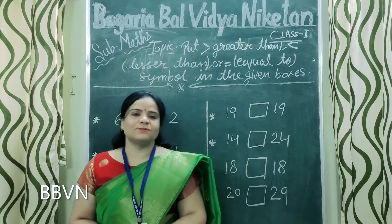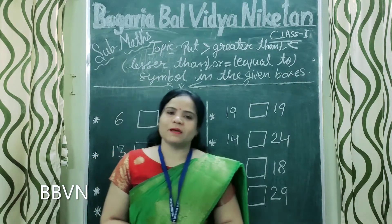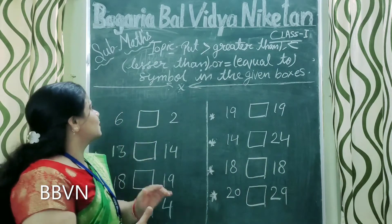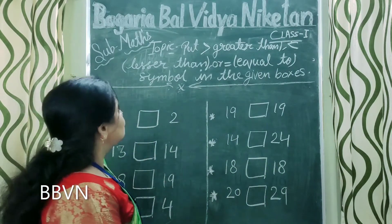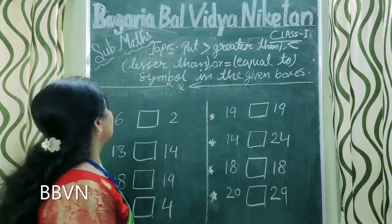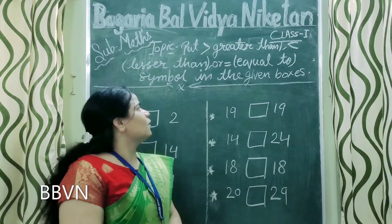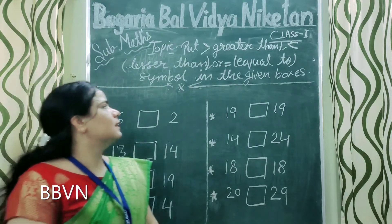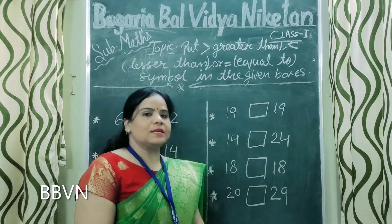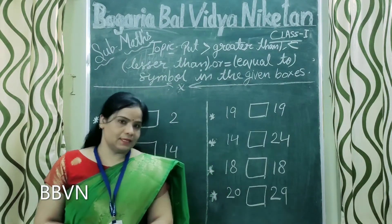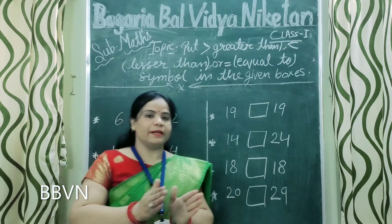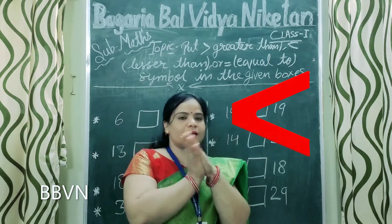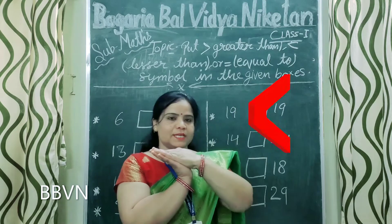Hello students, welcome back in my math class. Today our topic is to put greater than and lesser than or equal to symbol in the given boxes. Greater than means a big number — the face is open towards the bigger side.